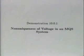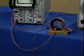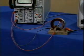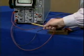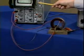The non-uniqueness of voltage in an MQS system can seem paradoxical, yet it is essential to the behavior of a common transformer. This experiment emphasizes this by showing how the voltages measured by these leads and the oscilloscope are path-dependent.